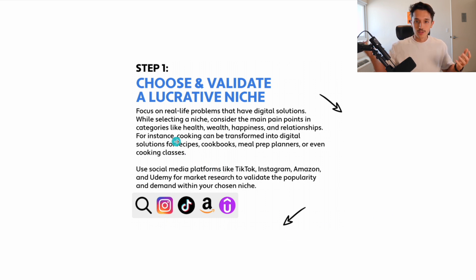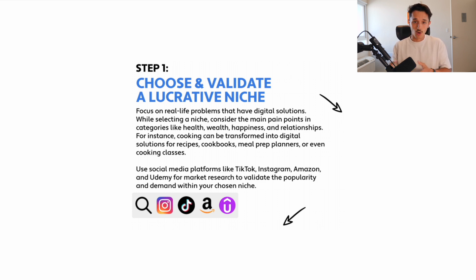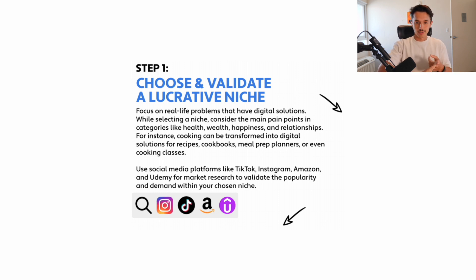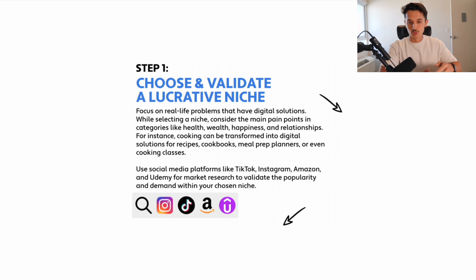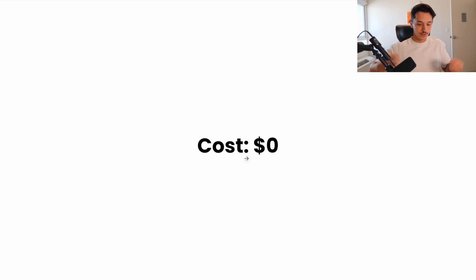Usually we want to break it down into something a little bit more specific. For instance, cooking — there's pain points attached to that. There's people that want to lose weight. Let's break that down from the health category into cooking, maybe the carnivore diet or vegetarian diet. The way that we do research for choosing niches is by going on TikTok, Instagram, even Amazon, Udemy — a lot of different websites to validate the popularity and demand inside of each niche. How much does it cost to find your niche? Nothing. It costs you nothing. It's just going to take you some time.